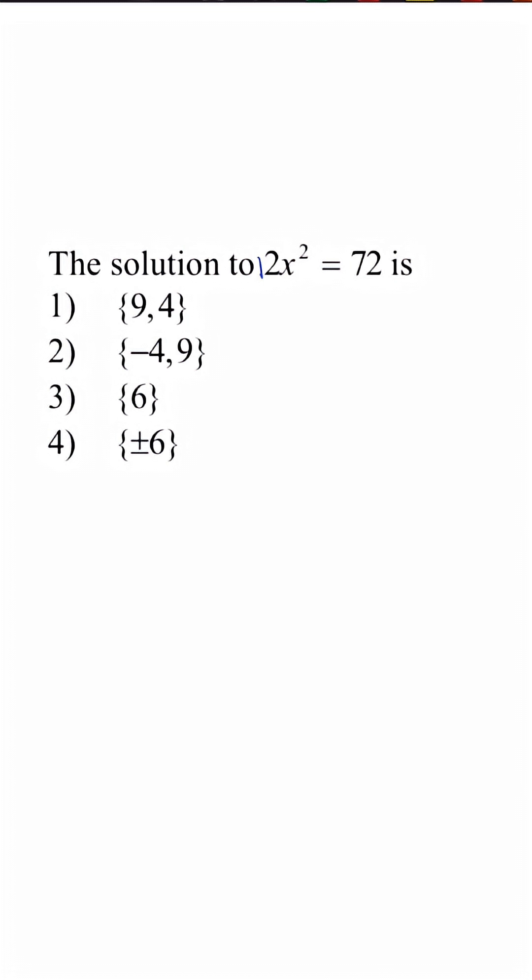Once we divide by 2, we have x squared is equal to 36. Take the square root of x squared, do the same thing with 36. x is equal to plus or minus the square root of 36, which is 6. So the answer could easily be 4.